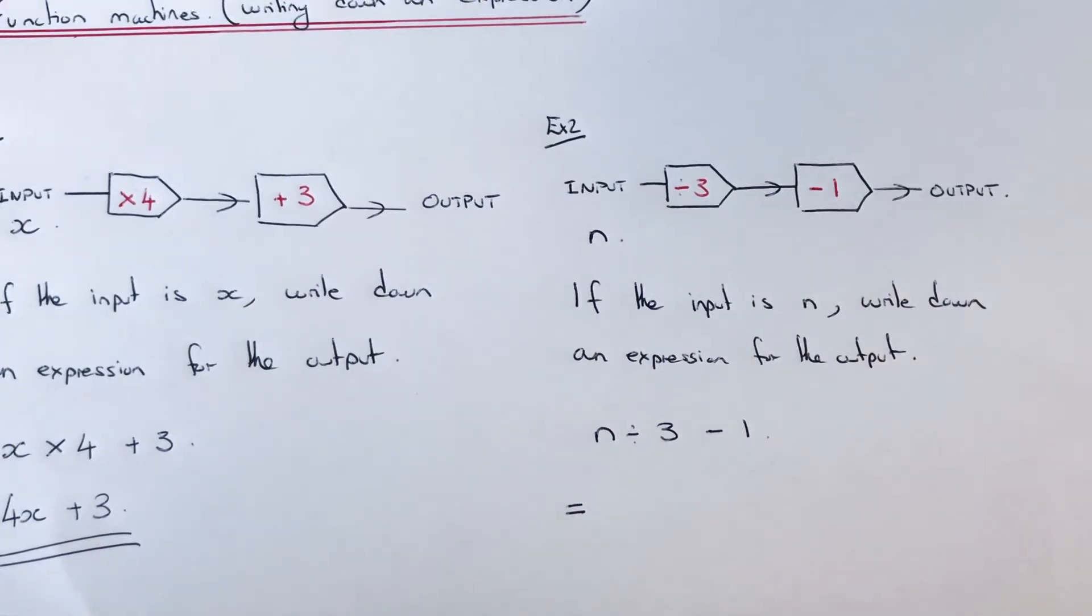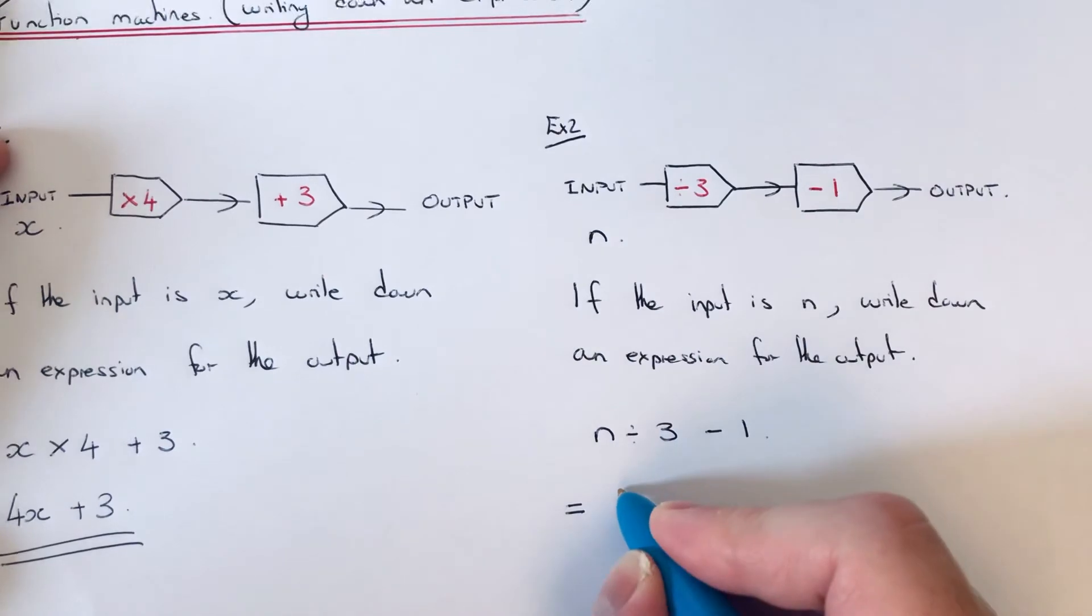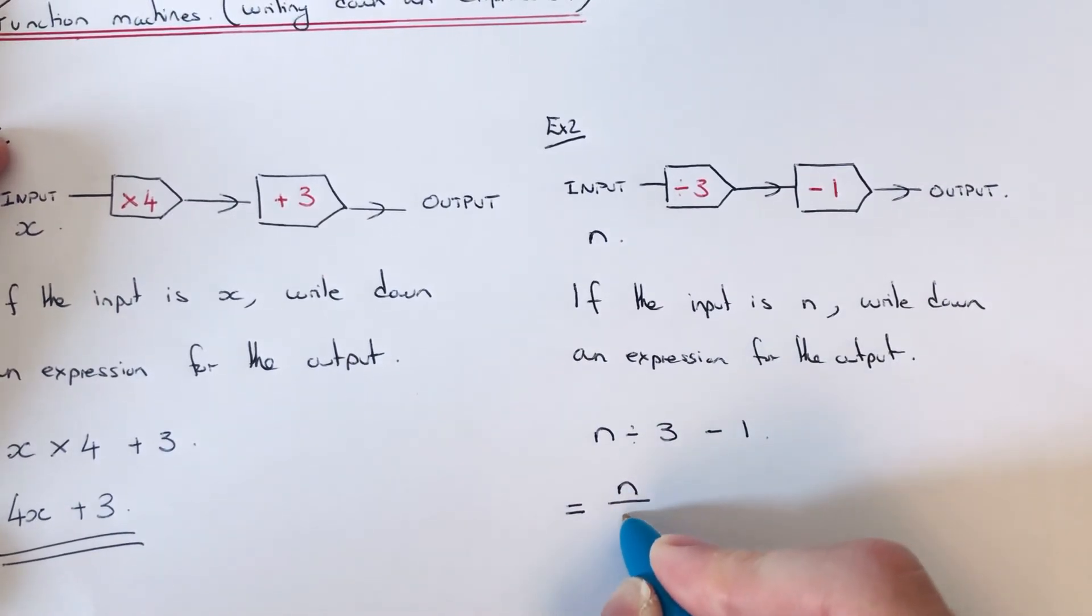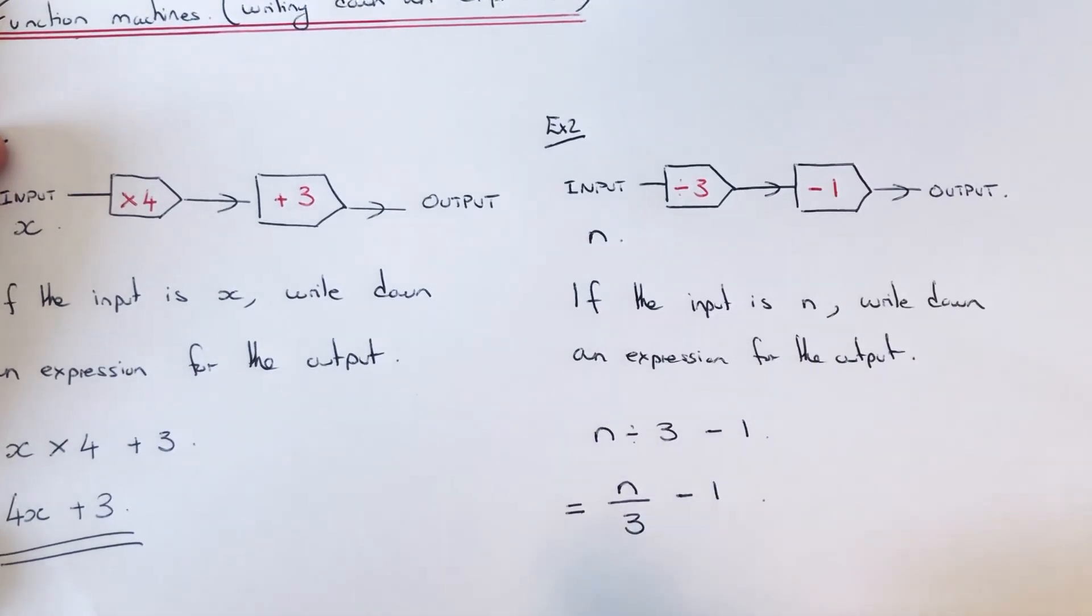We do a divide in algebra as a fraction, so we put the n on the numerator and we put 3 on the denominator. Then we just put the take away 1 at the end.